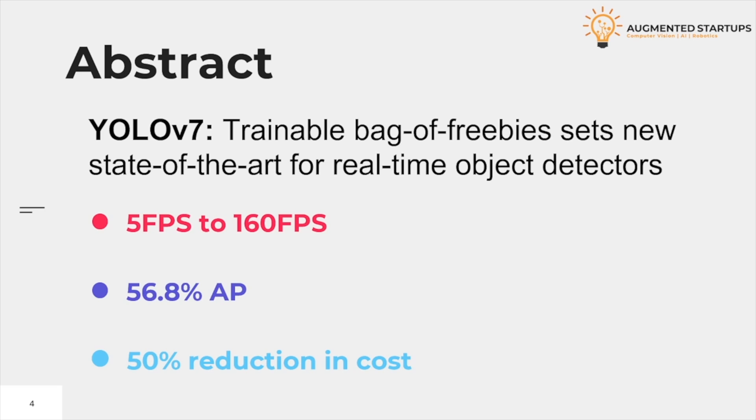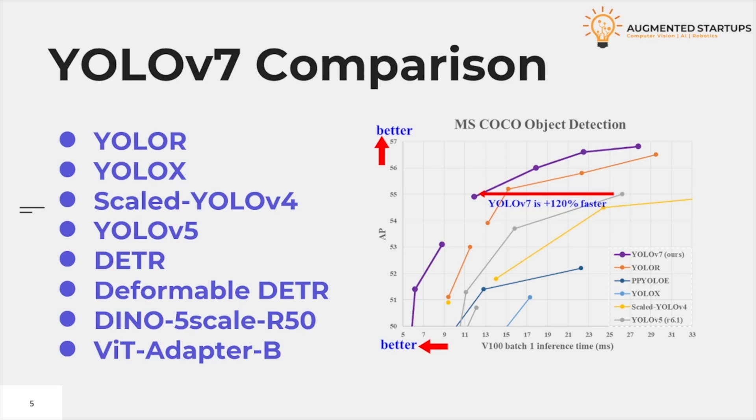YOLOv7 has the highest average precision of 56.8%. YOLOv7 outperforms both transformer-based object detectors and convolution-based object detectors. Some of the object detectors that YOLOv7 outperforms were YOLOR, YOLOR-X, and YOLOv5, as we saw in the introduction video.